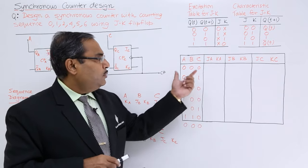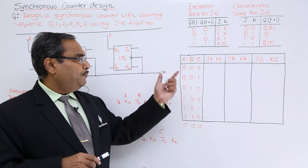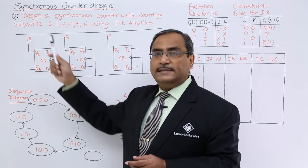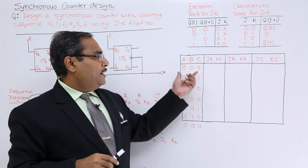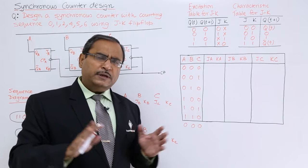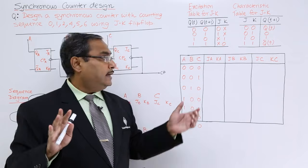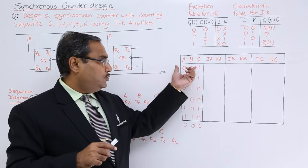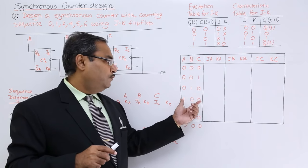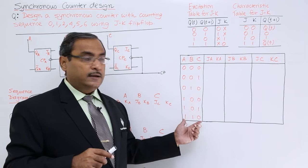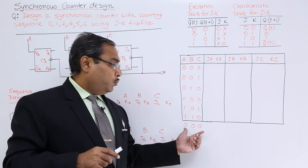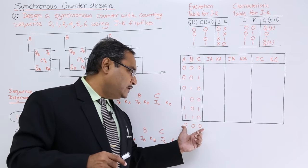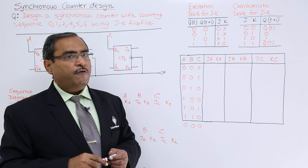Now we write the sequence. The flip-flop outputs are labeled A (MSB), B, and C. We write the counting sequence: 0, 1, 2, 4, 5, 6. After 6, the count returns to 0, so I have written 0 outside the table for convenience.